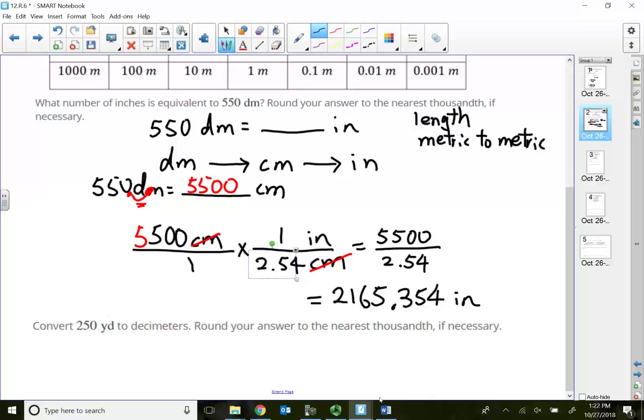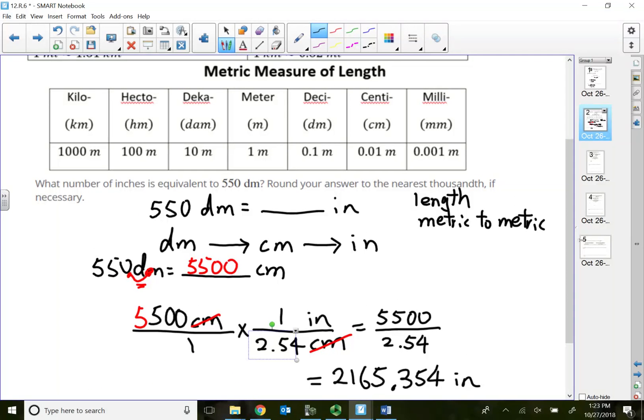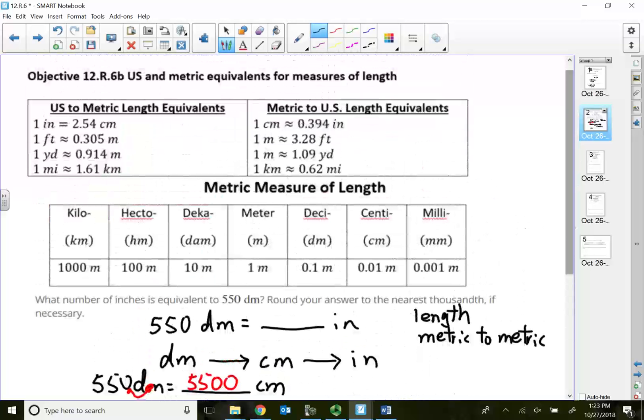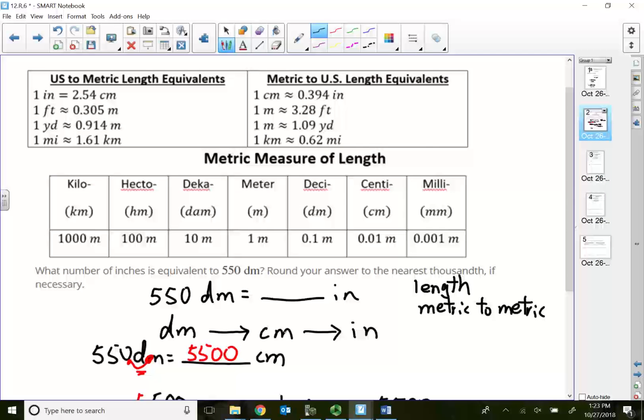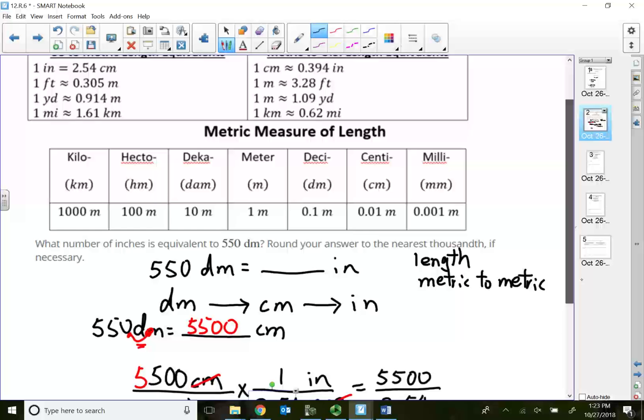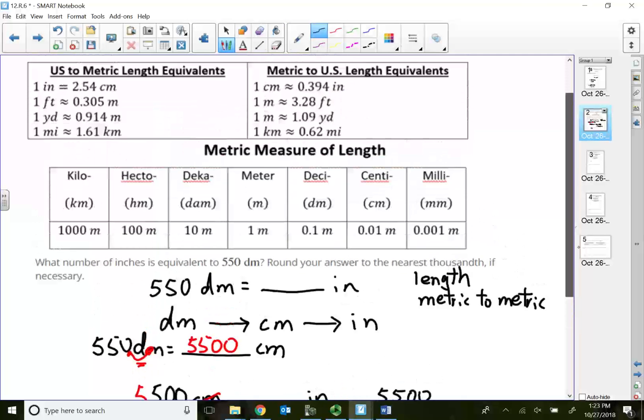Let's try another one. Convert 250 yards into decimeters. Oh, I apologize - I just realized I made a mistake. I'm trying to go from metric to US, so I should use the number on the right. I should use this one: 1 centimeter is 0.394 inches. My fault - once I'm at centimeters, I'm taking metric to US, so I messed up right there. I used the wrong number.